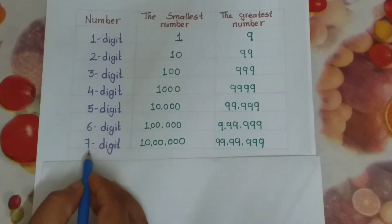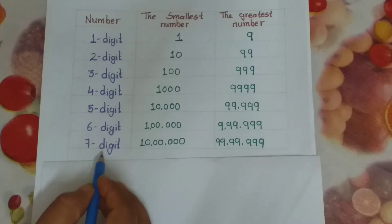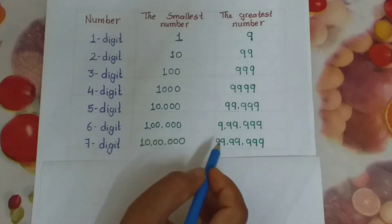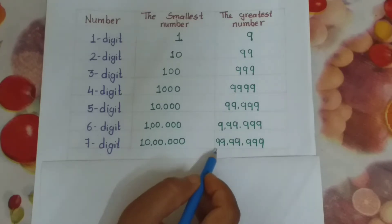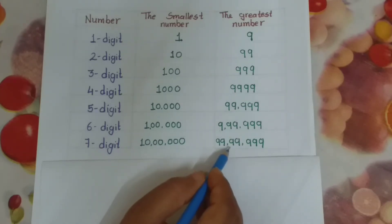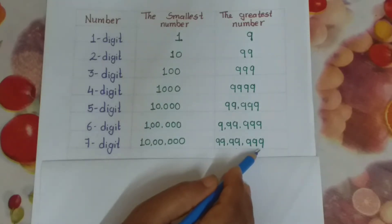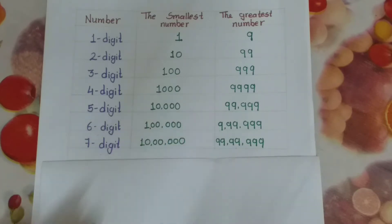Now for seven-digit numbers: the smallest seven-digit number is 10 lakh. And the greatest seven-digit number is also discussed. Now we will go ahead.